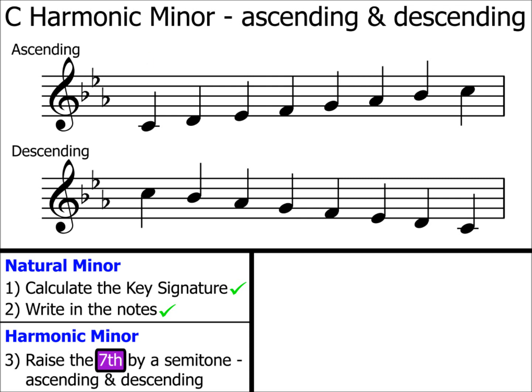We count the notes from C, number one, until we reach the seventh note. What note is it? It's B flat, not B. Don't forget to always keep an eye on that key signature. Step three tells us to raise it by a semitone. Therefore, we change the note to a B, one semitone higher than B flat.